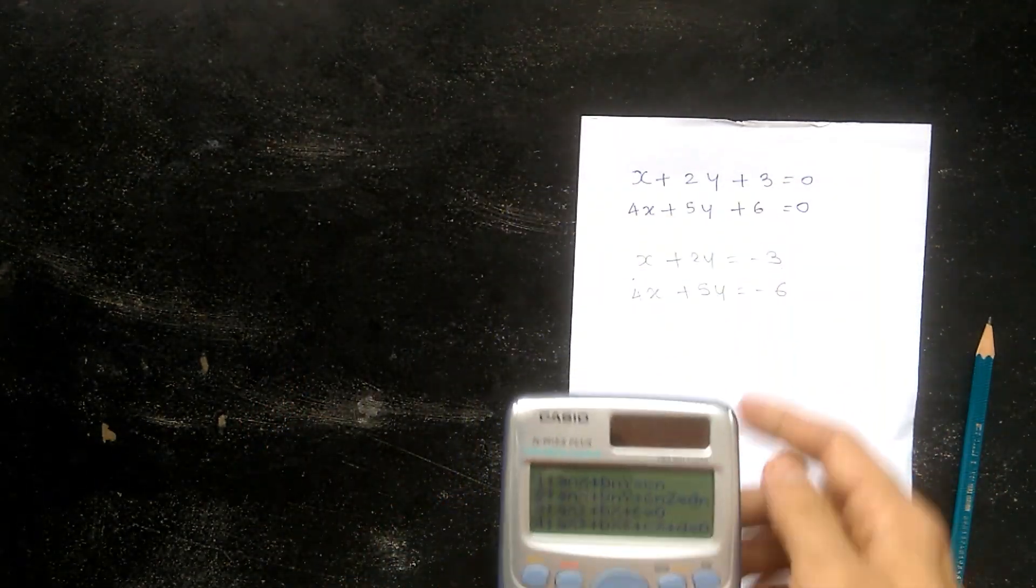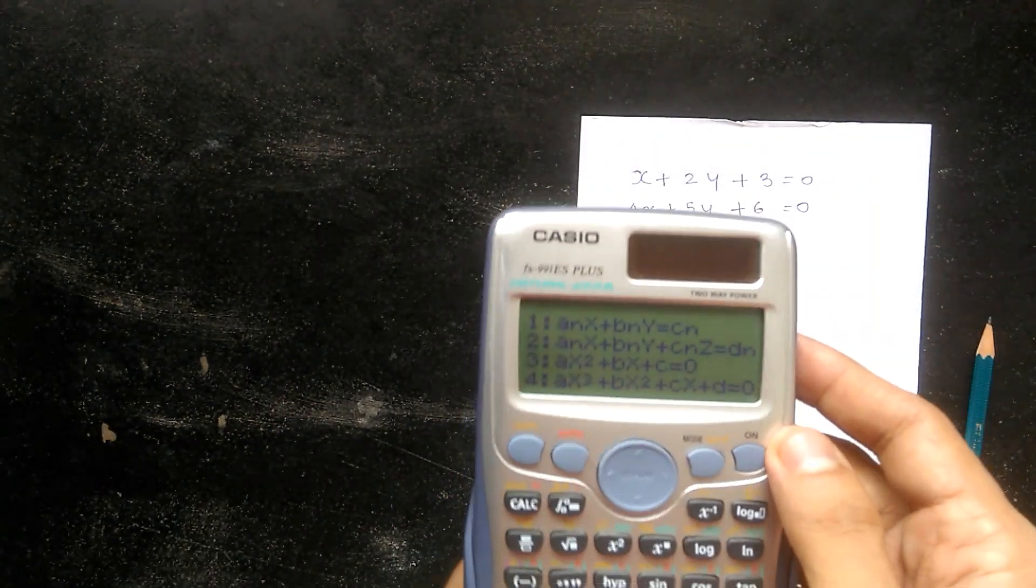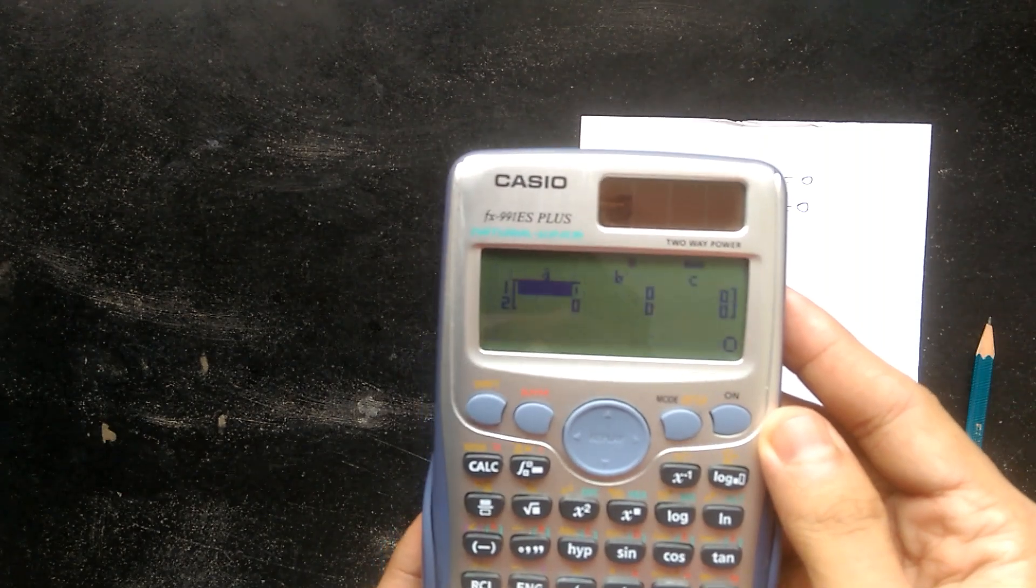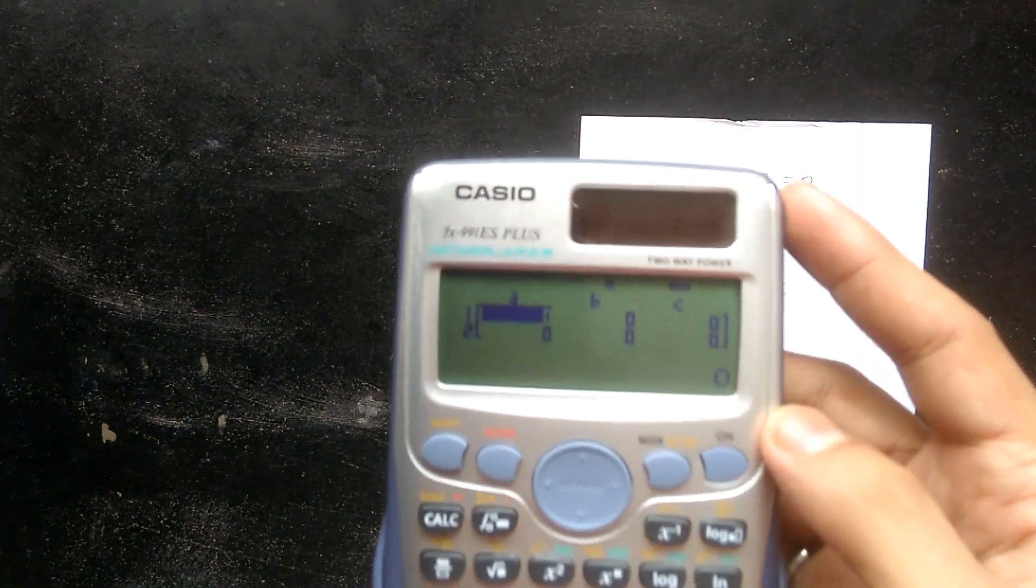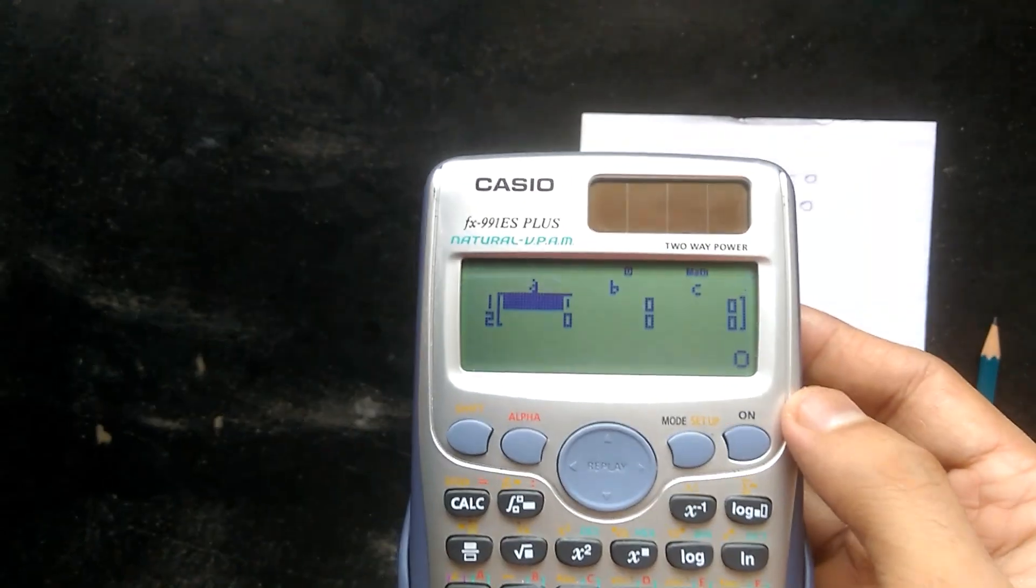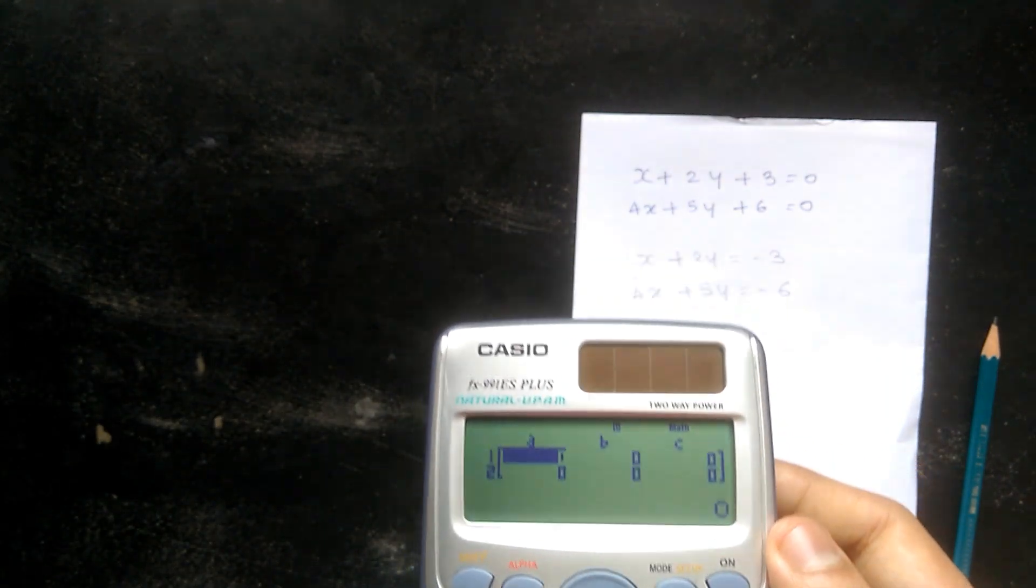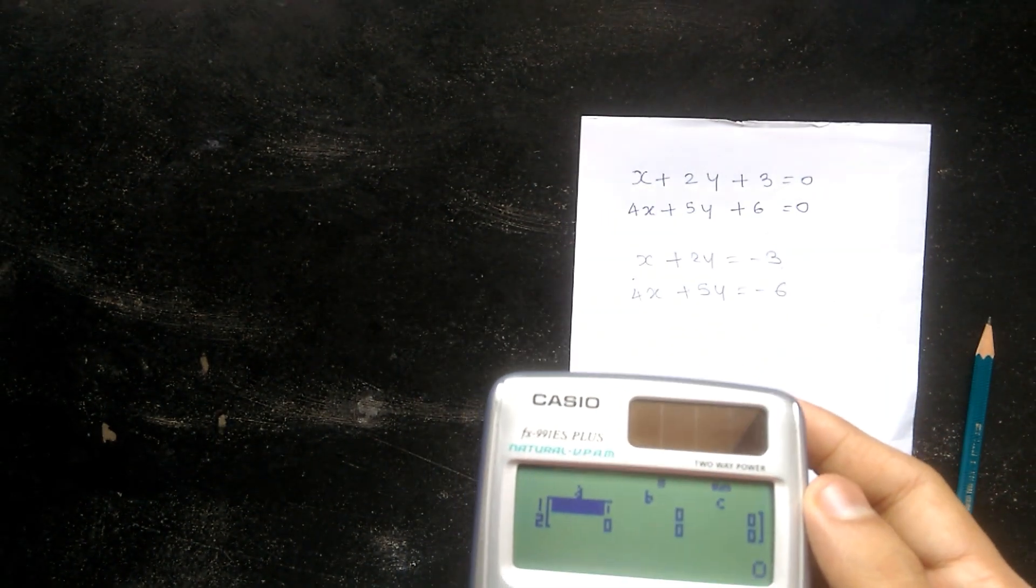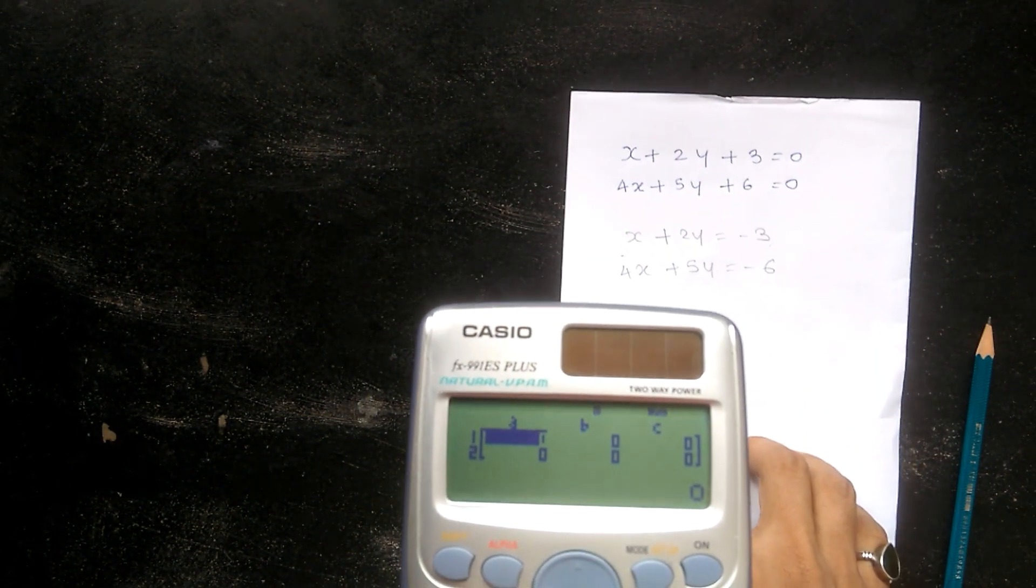After converting these equations into this format, we have to press number 1 button. As you can see, it is a 3 by 2 matrix displayed on the screen. We have to put the values into the calculator.